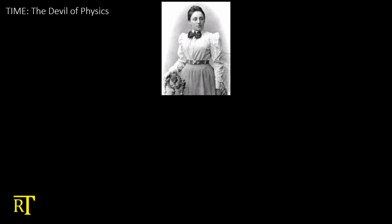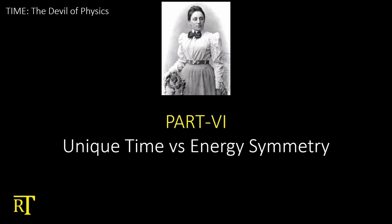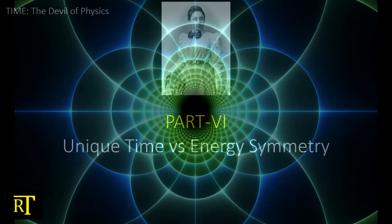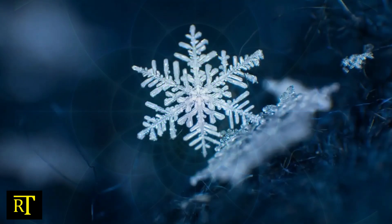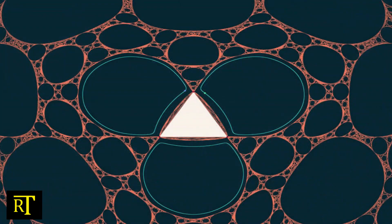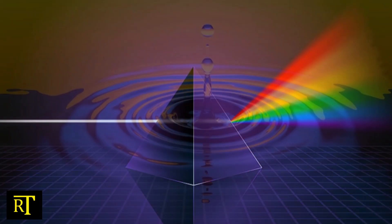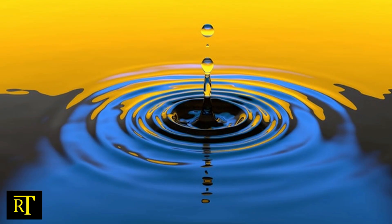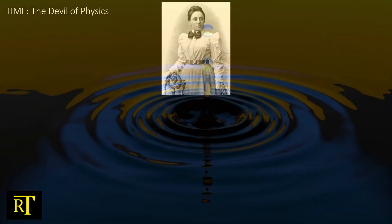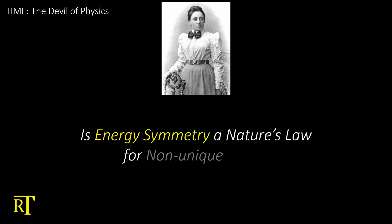One of my favorite investigations is in part six. Unique time versus energy symmetry. The beauty of symmetry discovered by Amy Noether. Symmetry shows itself everywhere in physics. But we will only look at the energy symmetry and how it conflicts with the uniqueness of time. Hence the question. Is energy symmetry a nature's law for non-unique time? There will be some simple thought experiments hopefully you will enjoy.